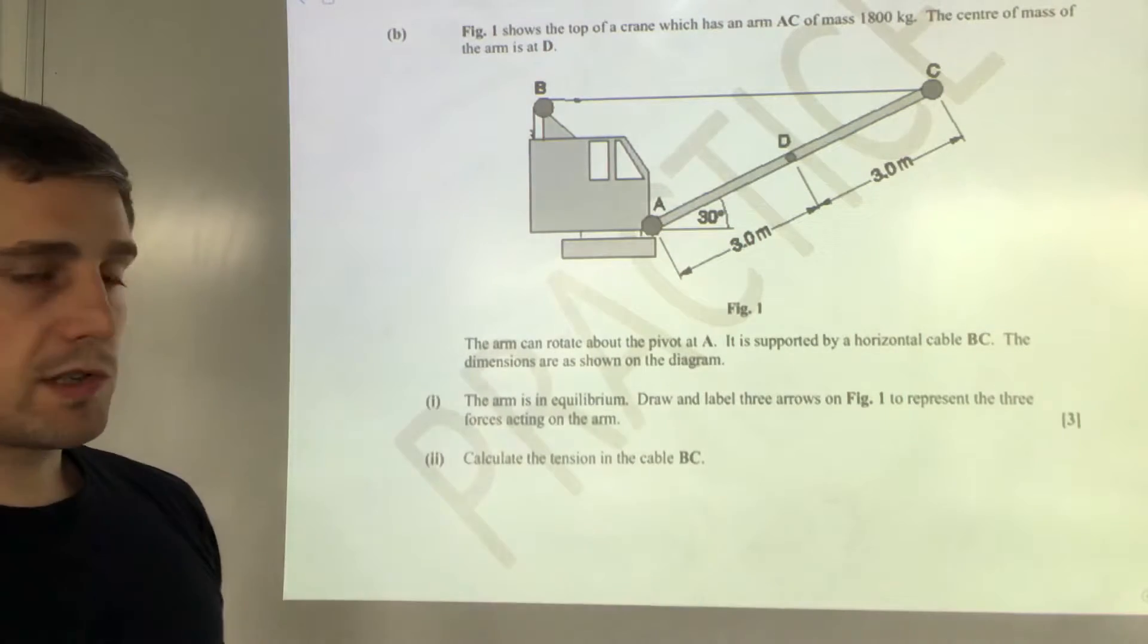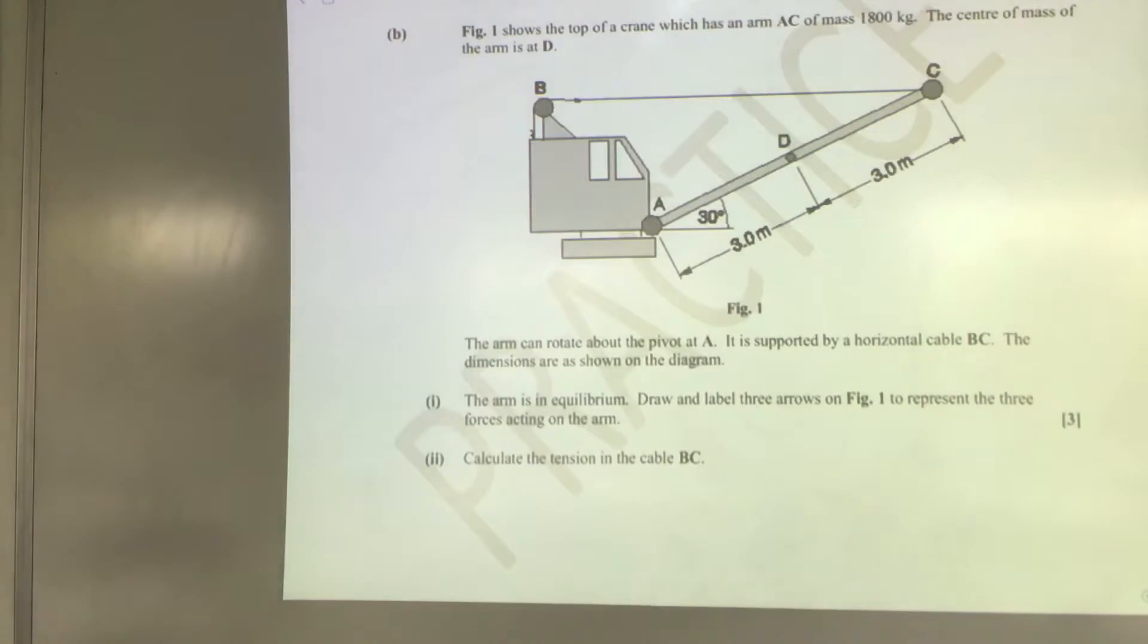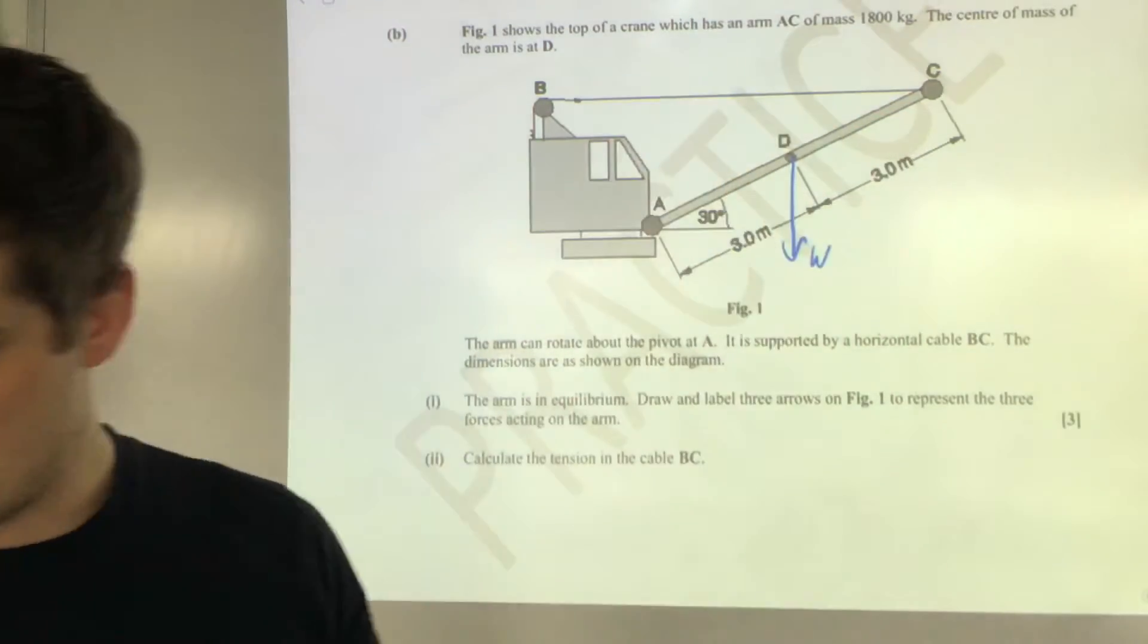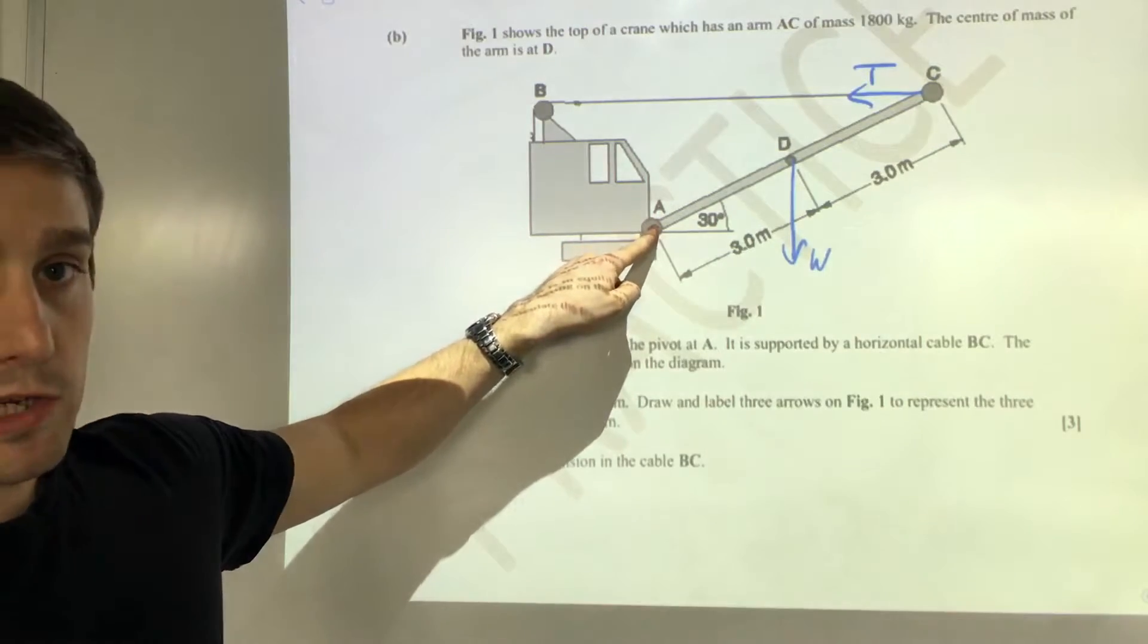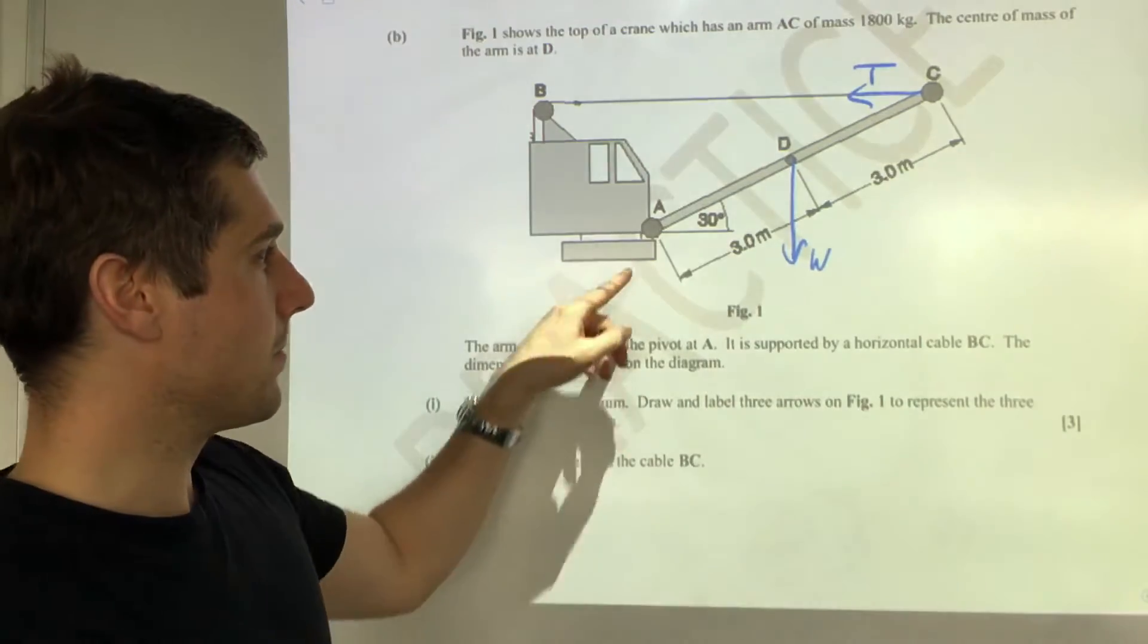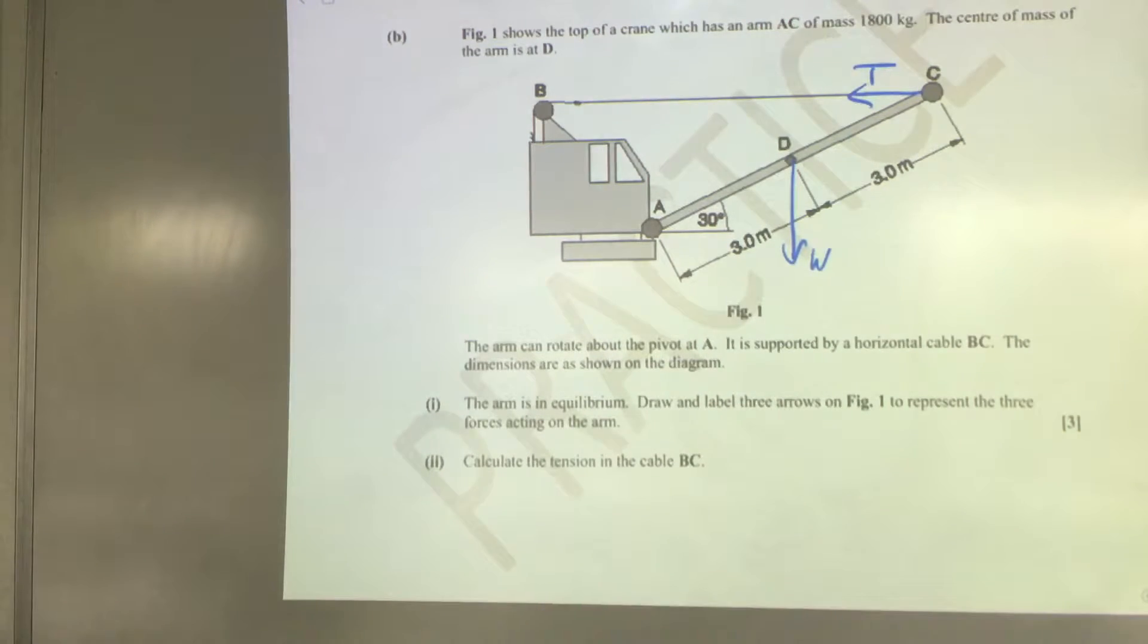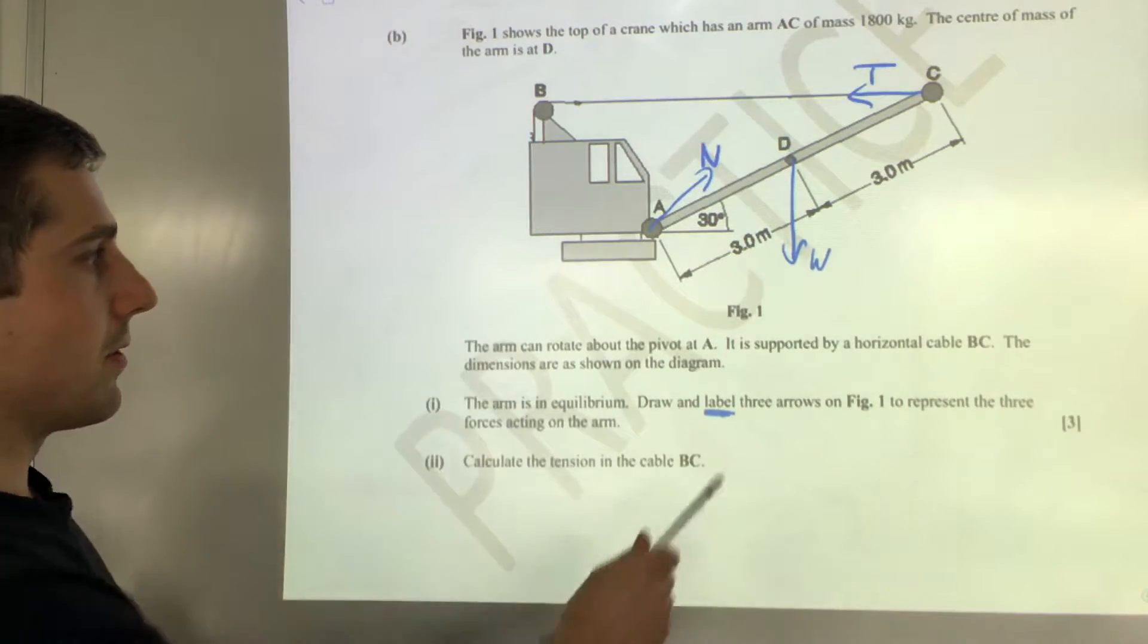We're asked to draw and label three arrows on the figure to represent the three forces acting on the arm. We've got the weight, that's the first thing. We have a cable here, so that's the tension force pulling the arm towards B. The third force is a normal reaction at A, so the crane body is pushing the arm away from itself, and that will act where T and W intersect so that they form a closed loop of forces. It's important that you appreciate the question asks you to label the forces, so I've called mine W, T, and N.